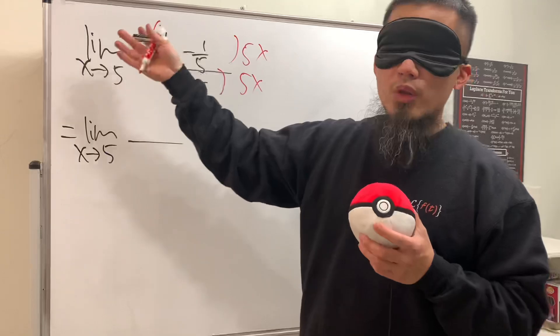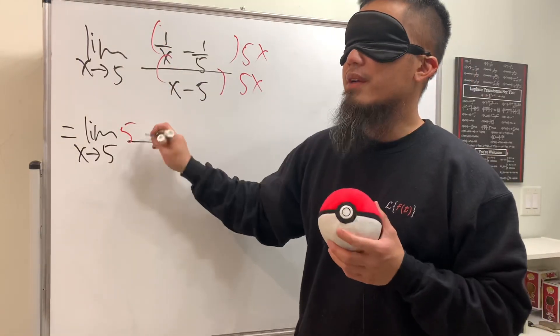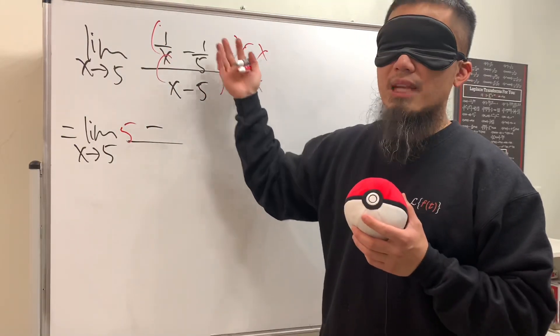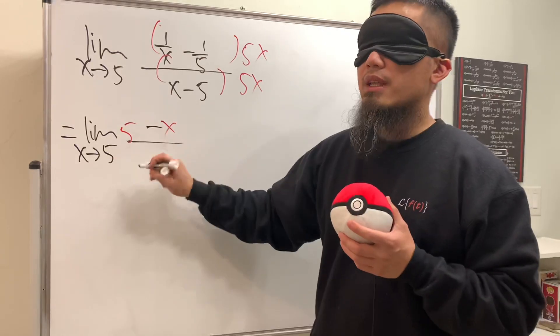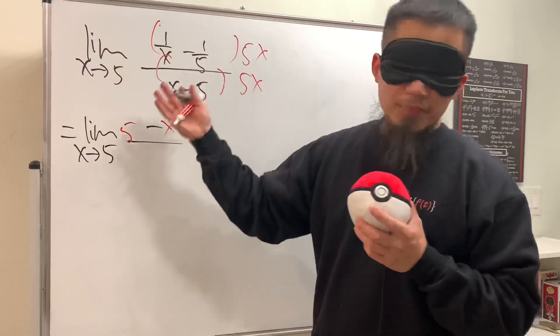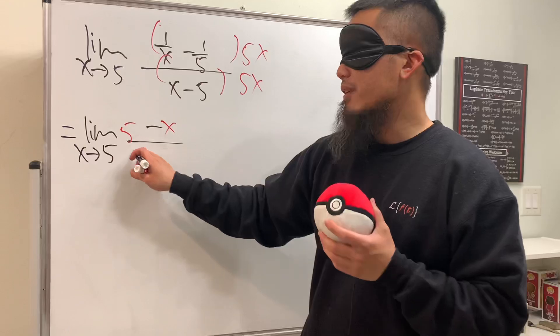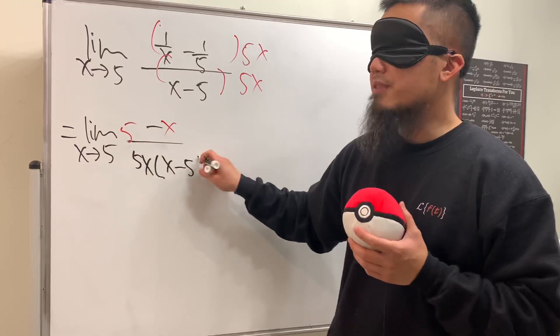5x times 1/x is 5, minus 5x times 1/5 we get x. At the bottom, we have 5x times (x - 5).